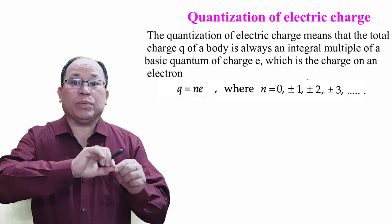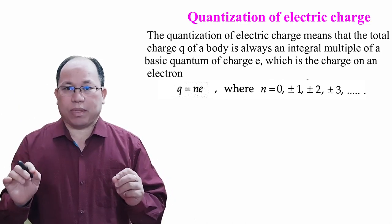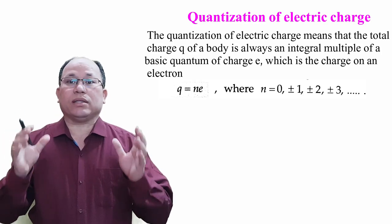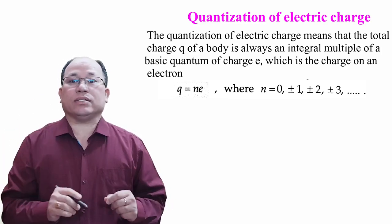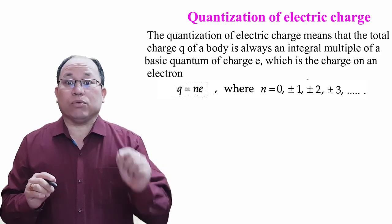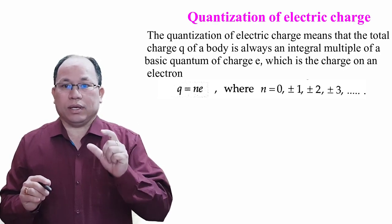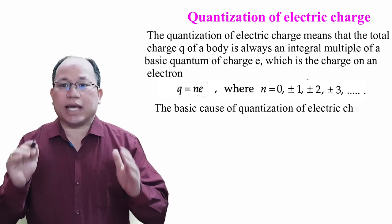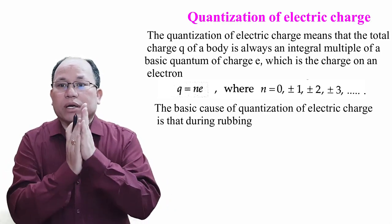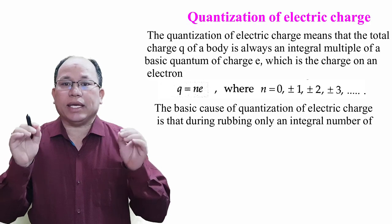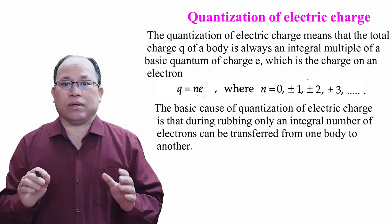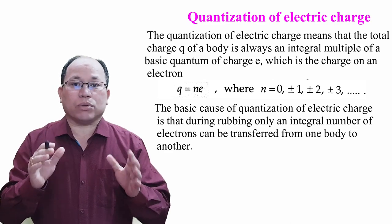This means that if a body or two bodies are charged, there will be some transfer of charges, that is, electrons will transfer. The basic cause of quantization of electric charge is that during rubbing, only an integral number of electrons can be transferred from one body to another.